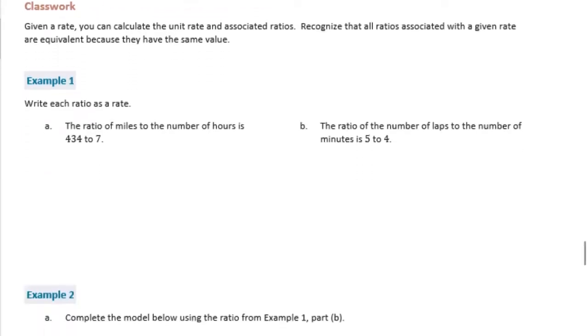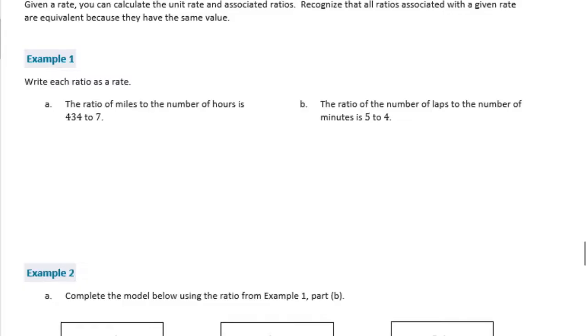Example 1, write each ratio as a rate. The ratio of miles to the number of hours is 434 to 7. We want to know what that rate is. The ratio would be 434 to 7. We can figure out the rate by dividing.